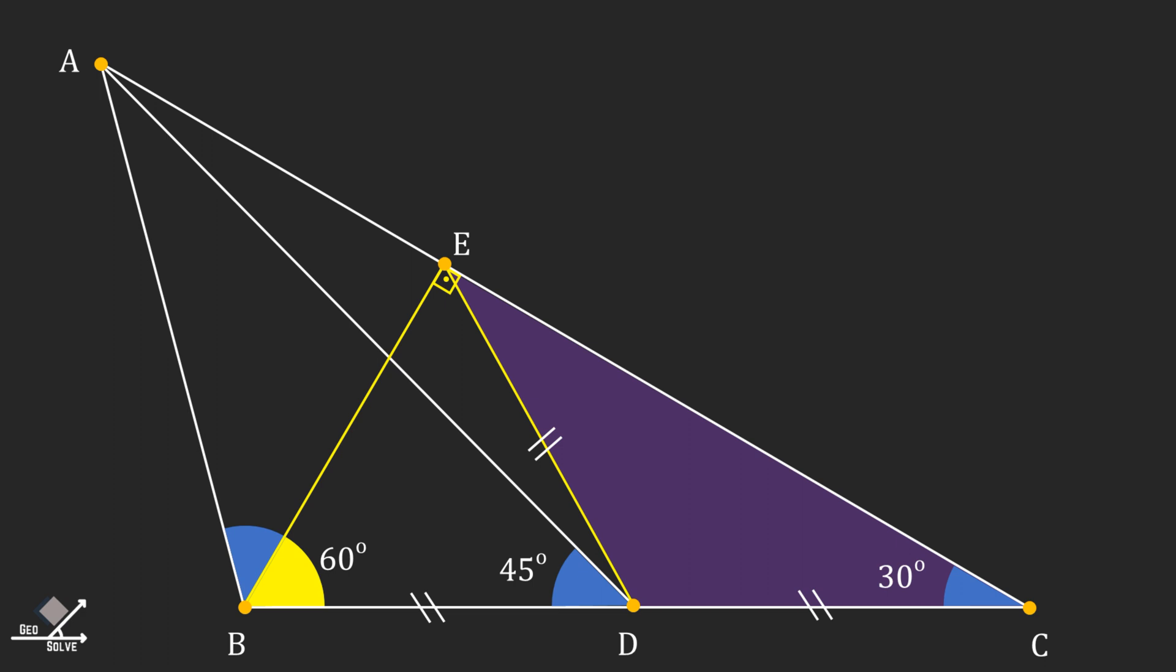Now consider this shaded triangle. As you can see, it's an isosceles triangle. So its base angles must be equal, which gives angle DEC as 30 degrees and EDC as 120 degrees.